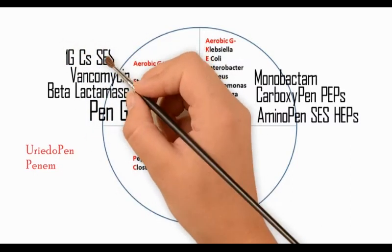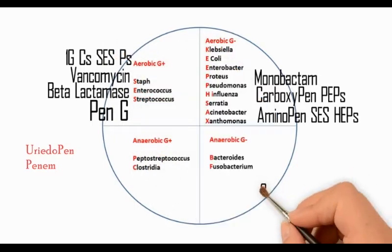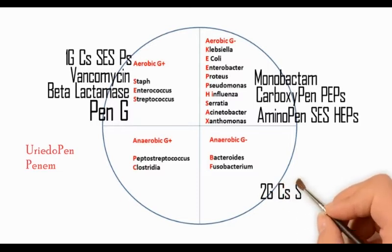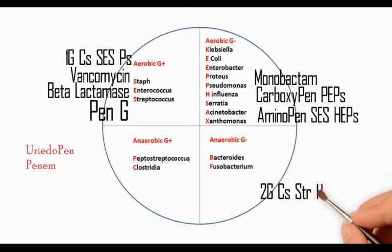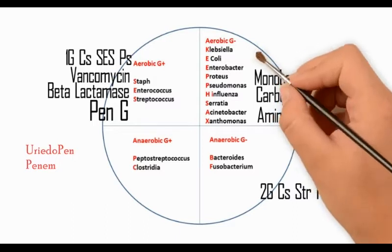First generation cephalosporins are active against Staph, Enterococcus, and Streptococcus. The second generation cephalosporins have a very broad spectrum of activity, acting against Streptococcus, Haemophilus, Enterococcus, E. coli, Neisseria, Proteus, and Klebsiella. They also act against anaerobes such as Bacteroides.